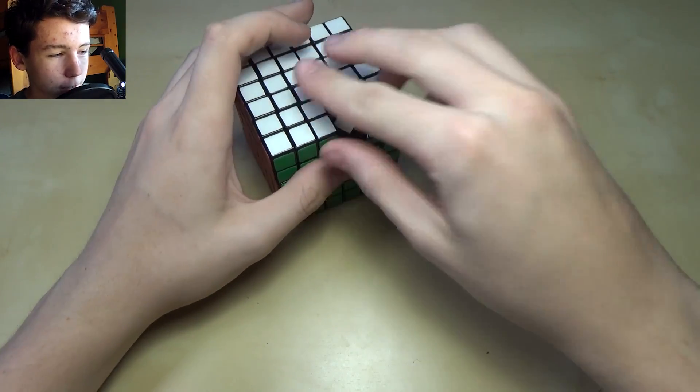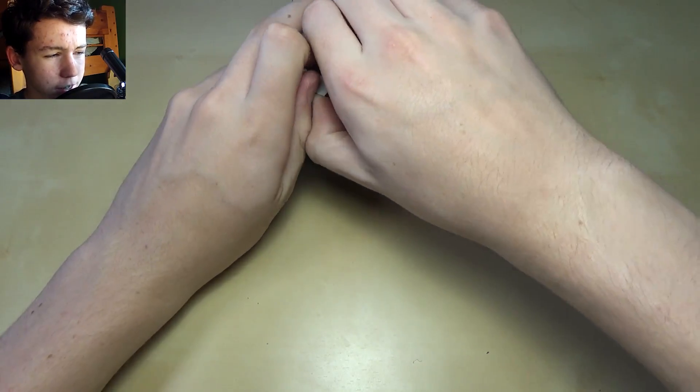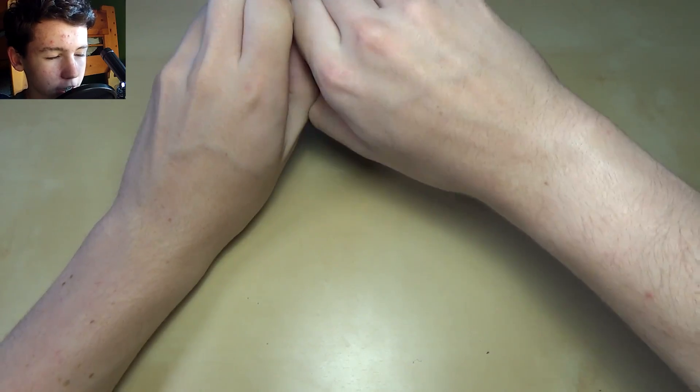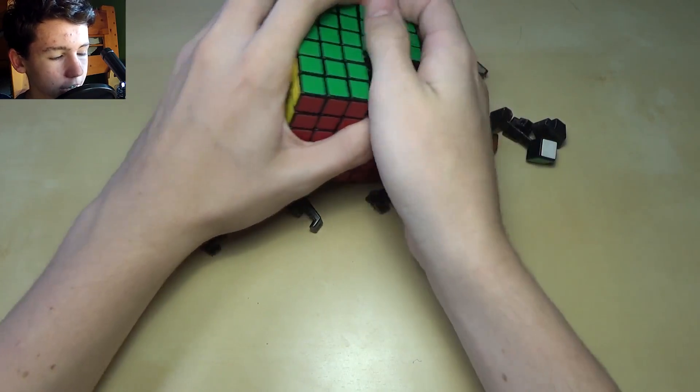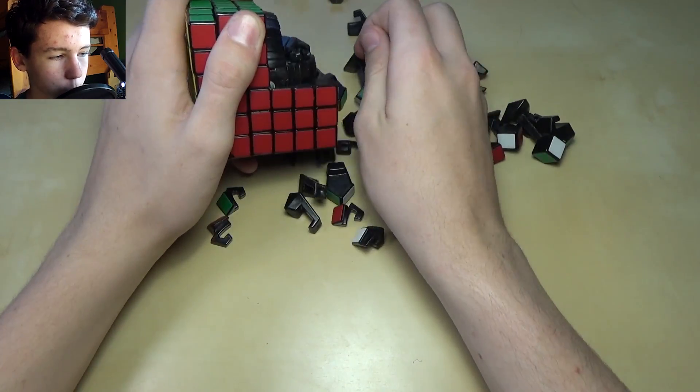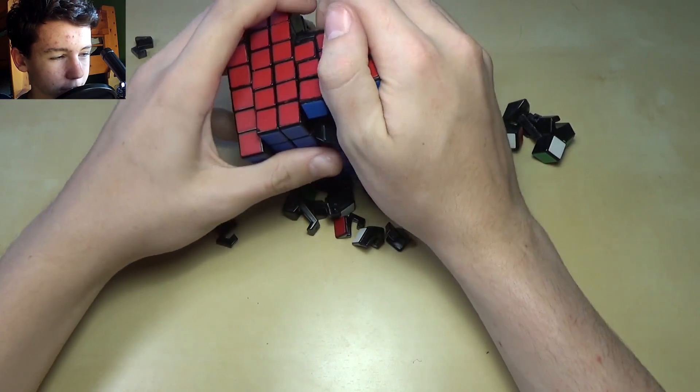So now the moment you guys have all been waiting for. We can take this little section out right here. Make sure not to lose any of the pieces. That would be frustrating. Take this section out and here we go. Now the entire puzzle will come apart and a piece just fell on the ground. Great.